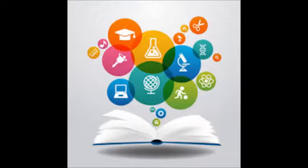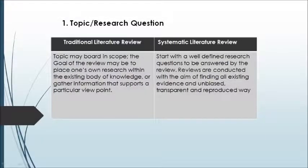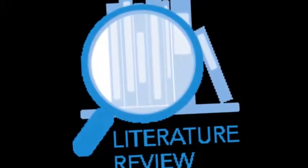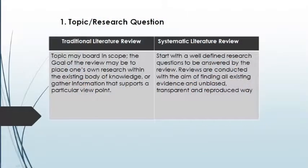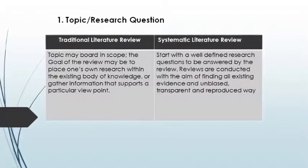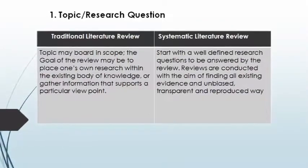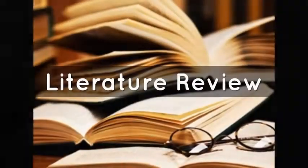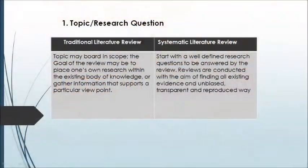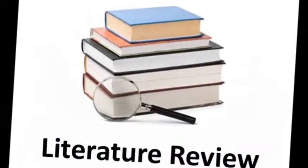The first difference between the systematic literature review and the traditional literature review is the research question or topic. A traditional literature review topic may be broad in scope — the goal may be to place one's research within the existing body of knowledge or gather information that supports a particular viewpoint. In contrast, a systematic literature review starts with a well-defined research question, and reviews are conducted to find all existing evidence in an unbiased, transparent, and reproducible way.